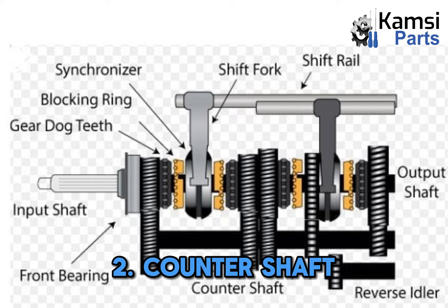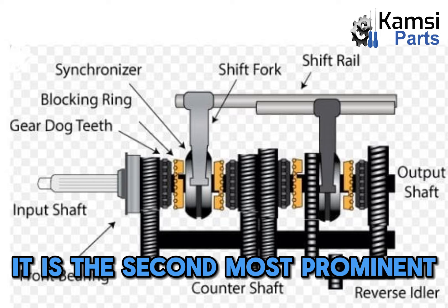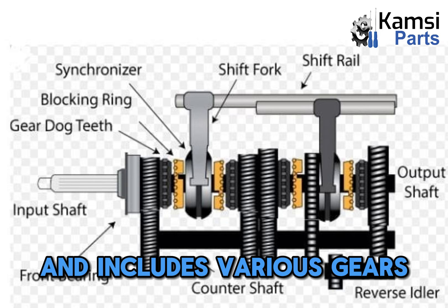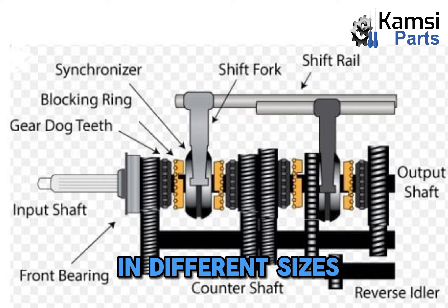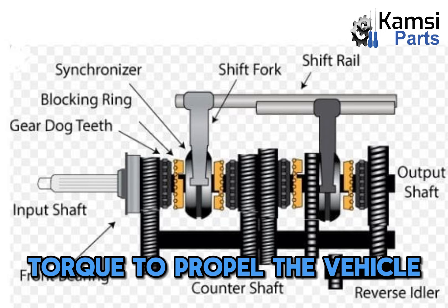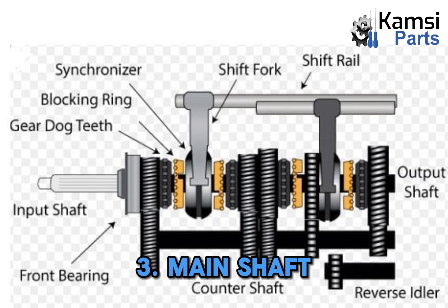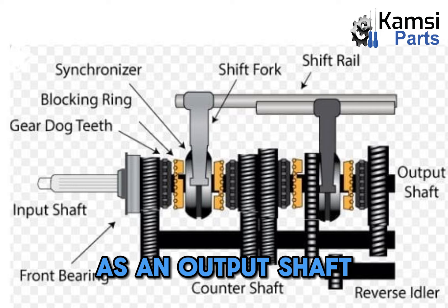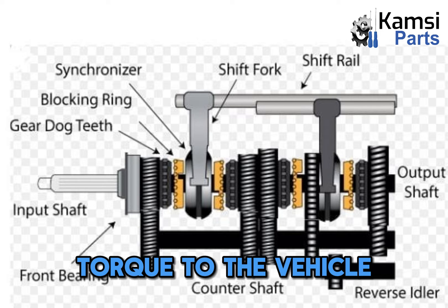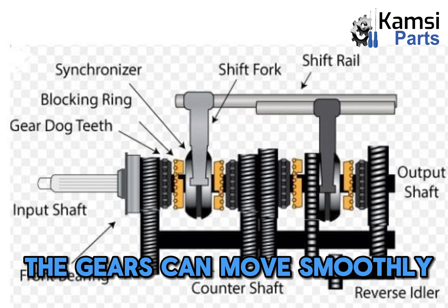2. Counter shaft: it is the second most prominent gearbox part and includes various gears in different sizes that can produce enough torque to propel the vehicle. 3. Main shaft: it is also referred to as an output shaft. It offers mandatory torque to the vehicle. It has ridges and teeth so the gears can move smoothly.